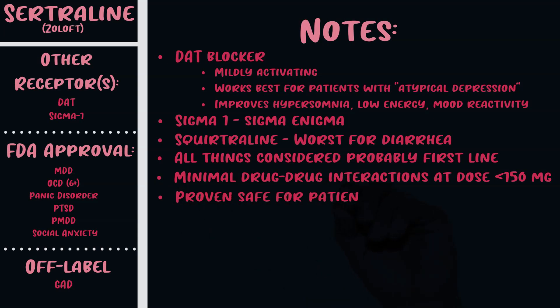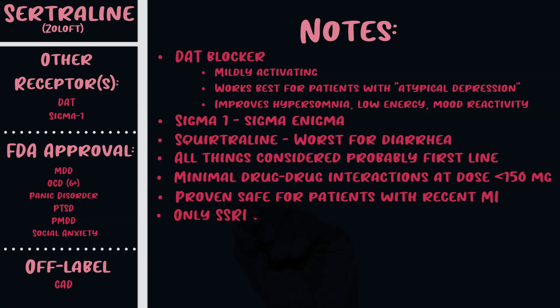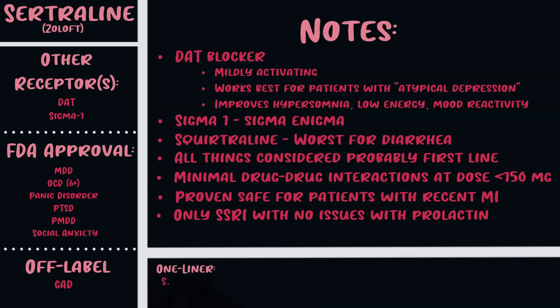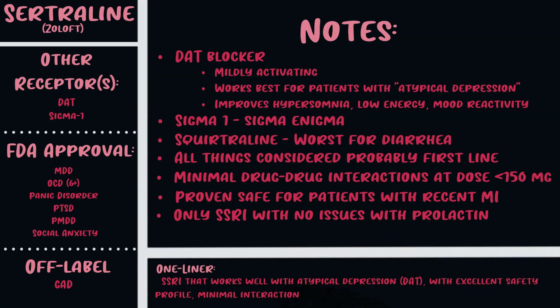Zoloft has the best safety record in cardiovascular disease and is proven safe in patients with a recent myocardial infarction. It's also one of the only SSRIs with no issues with prolactin, which helps remember it has the most evidence base for use during breastfeeding when necessary. To summarize: Zoloft works well with atypical depression given its DAT blockade, has an excellent safety profile with minimal interactions at doses under 150 mg, but can cause diarrhea.